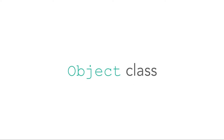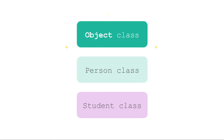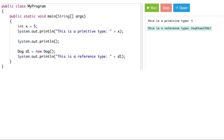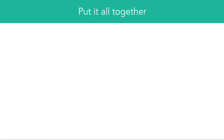The Object class is the god of all classes — the parent of all parents, the superclass of all superclasses. It's at the very top of the Java hierarchy. We previously mentioned how Java automatically defers to the Object class's toString method. However, you might remember that it doesn't really output meaningful information to humans. Let's put it all together.